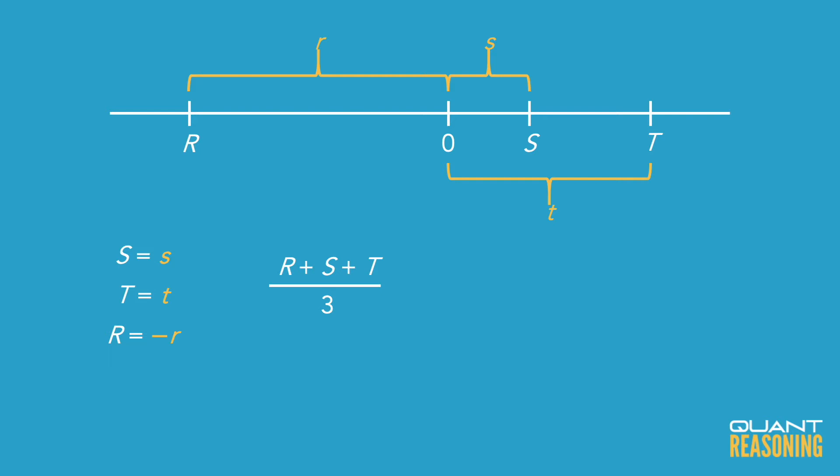But the answer choices all have lowercase r, s, and t. Using the insights we already discussed, I'll replace uppercase R with negative lowercase r, and replace uppercase S and T with lowercase s and t. That leads us directly to answer choice E.